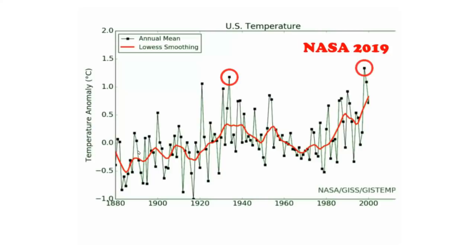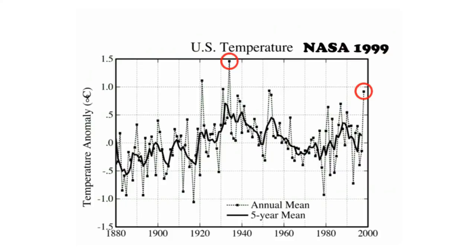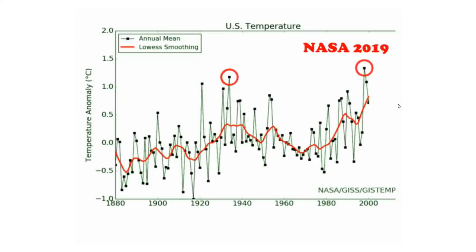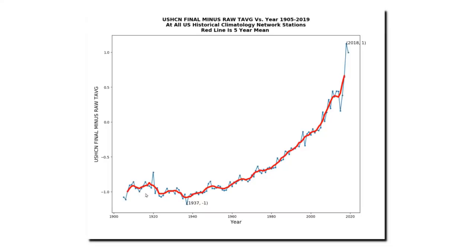In part one of this series, I showed how government agencies have altered the U.S. temperature data dramatically over the past 20 years. By altering the data, they've turned a long-term cooling trend into a warming trend. In part two, I showed the hockey stick of data alterations being made by NOAA. Older U.S. temperatures are cooled by about one degree Fahrenheit, and recent temperatures are warmed by about the same amount, creating about two degrees of fake warming which doesn't actually exist in the measured temperature record.